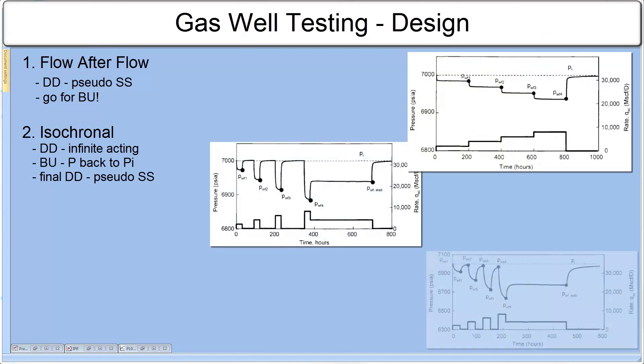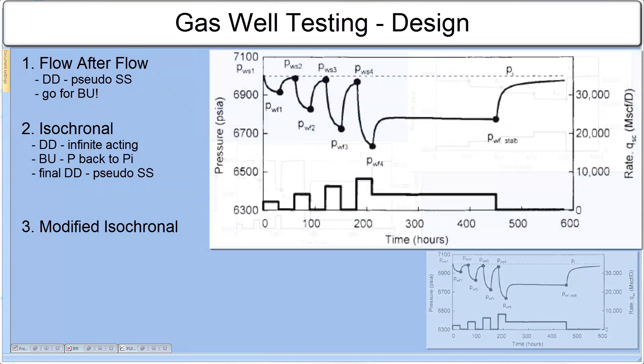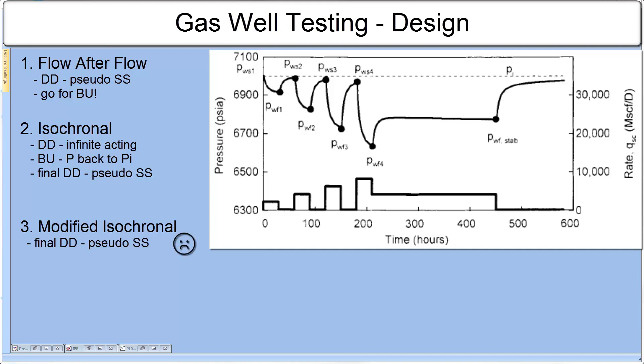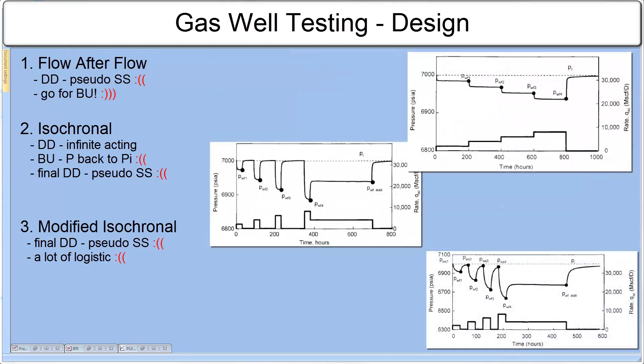With modified isochronal gas test, the procedure is similar to isochronal, except that the intermediate shutting periods have the same duration as the drawdown periods, and the last drawdown is extended. So the main assumption of the test is only the last flow is steady state. But this test is too complex and requires a lot of logistics.